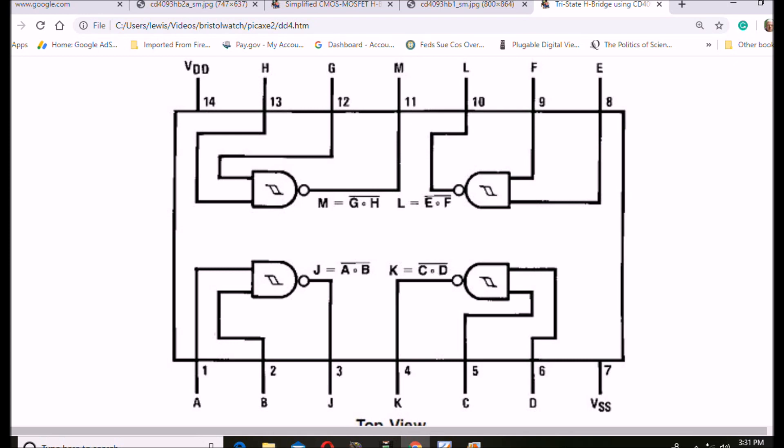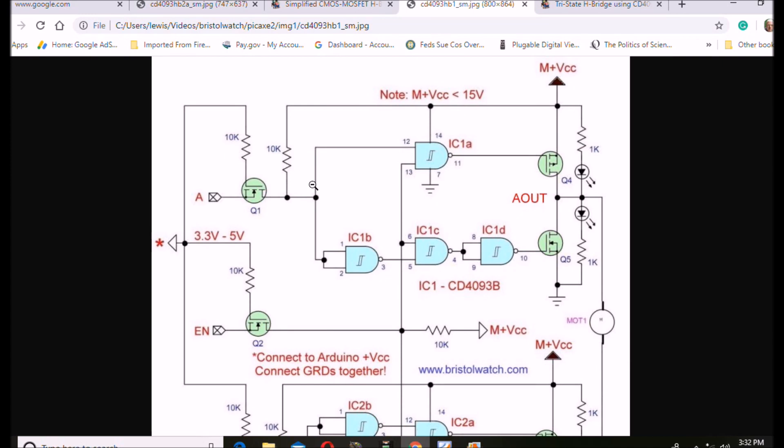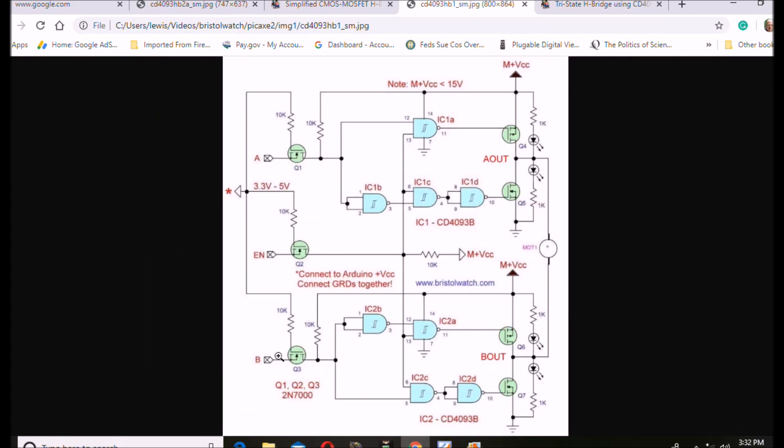So, that completes this basic review of that particular H-bridge circuit. A much easier input circuit to deal with. And you get your Schmidt triggers and everything, plus your enable and your high Z.